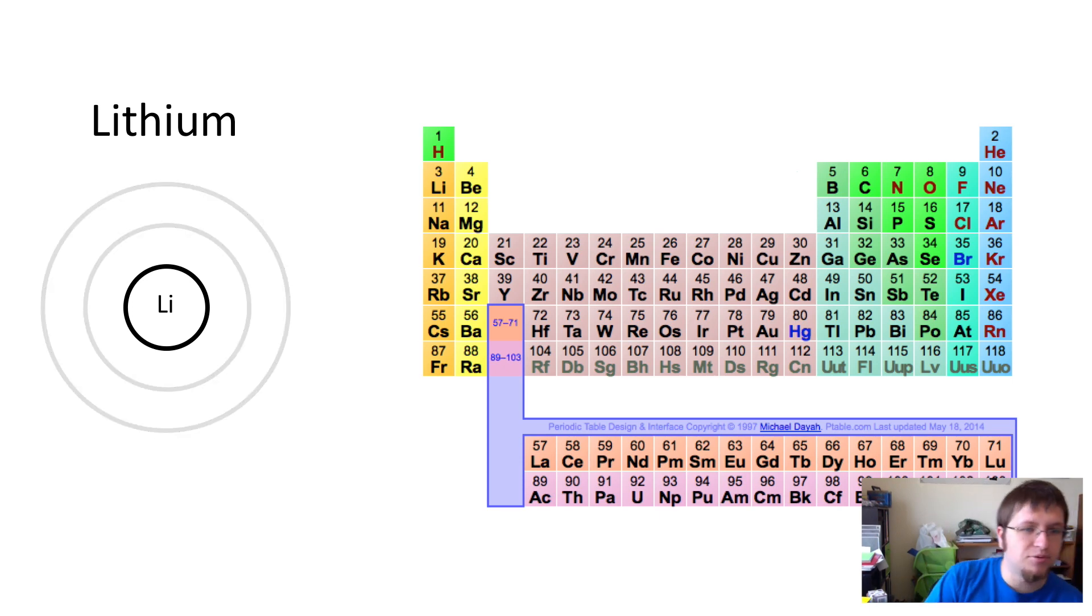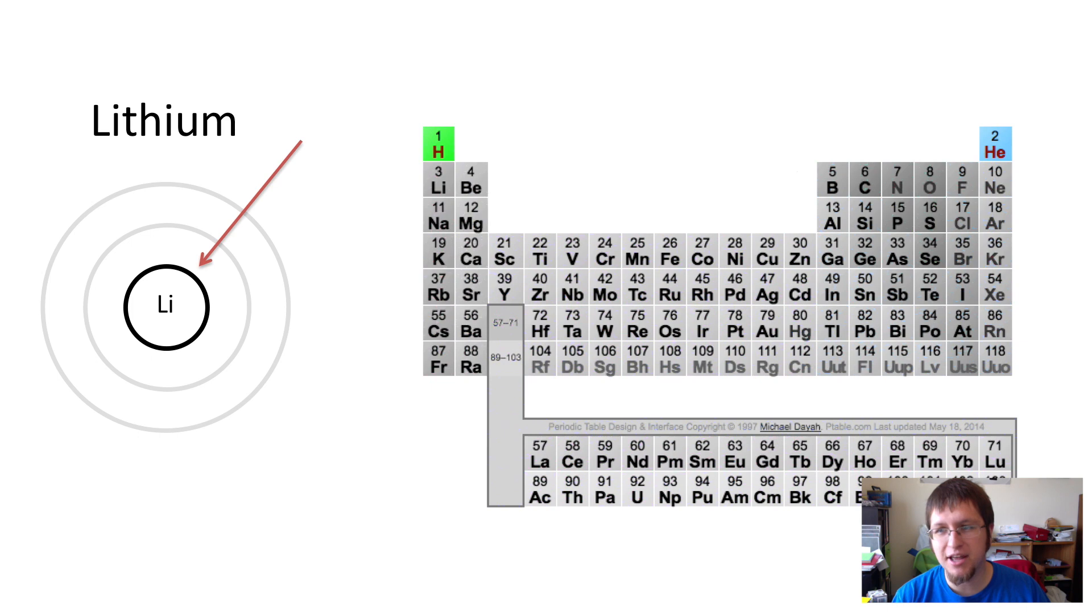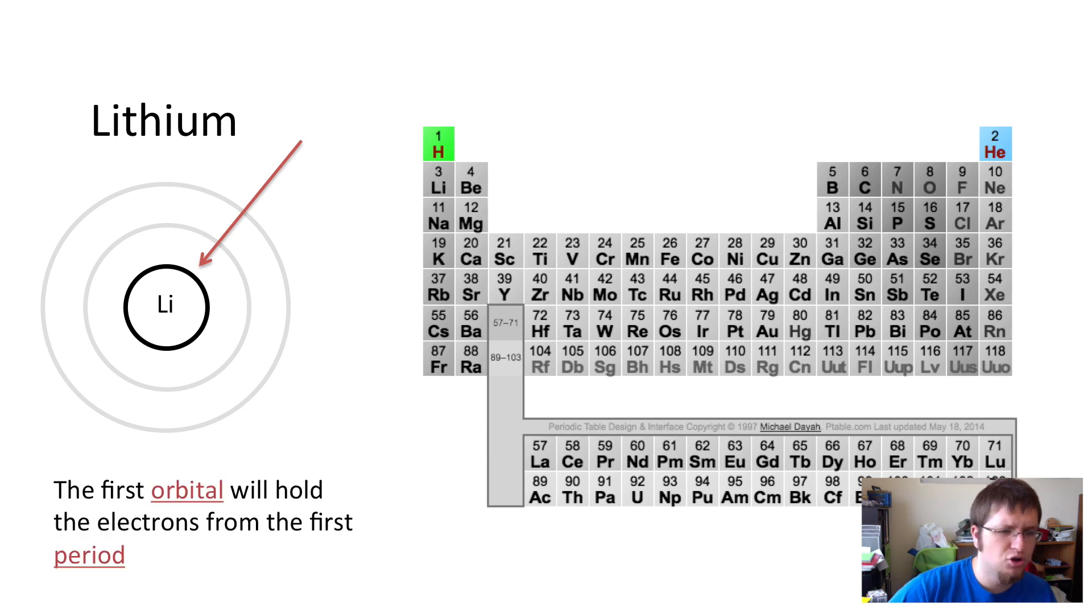So the periodic table, we've got our first orbital right here. The cool thing is the orbitals line up just with the periods on the periodic table. You notice the periodic table there has two elements in the first period. The first orbital will hold the electrons from the first period, which means it can hold two electrons. Now, that's it. The first shell can hold the two electrons.